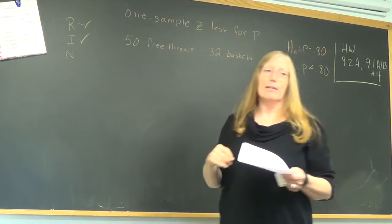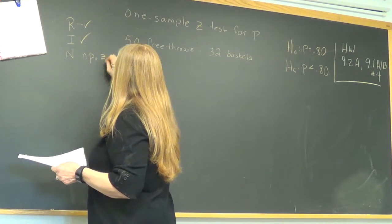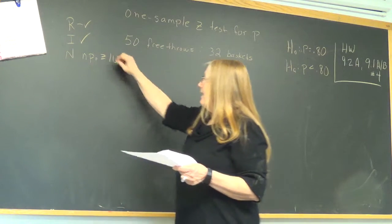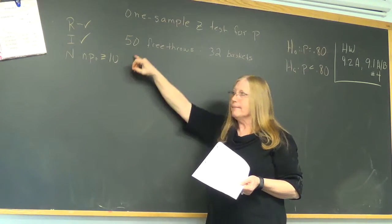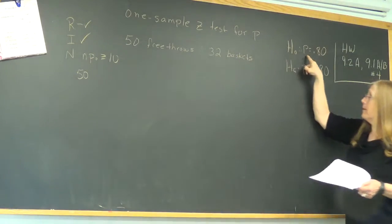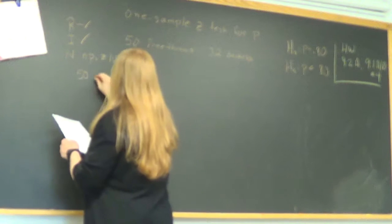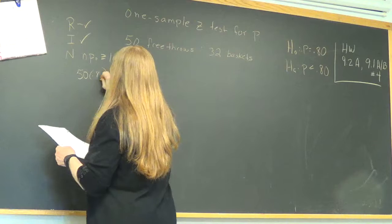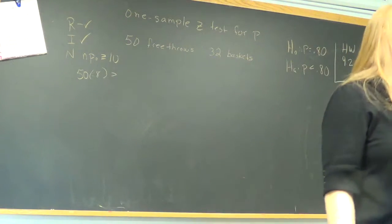And then normal is where we have to do that calculation I mentioned. So it's changed from N times P is greater than 10 to N times P-naught is greater than or equal to 10. So my N is, in this case, is how many were in the sample. There were 50. P-naught is my claim, which remember now is this number, 0.8.